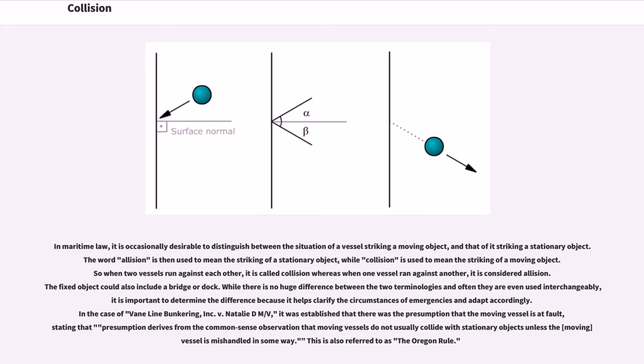The fixed object could also include a bridge or dock. While there is no huge difference between the two terminologies and often they are even used interchangeably, it is important to determine the difference because it helps clarify the circumstances of emergencies and adapt accordingly.